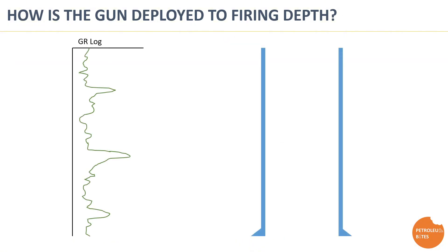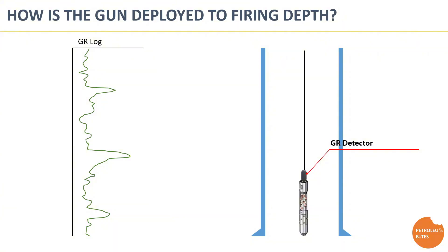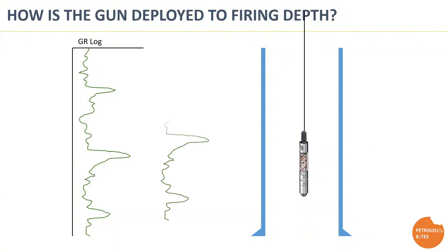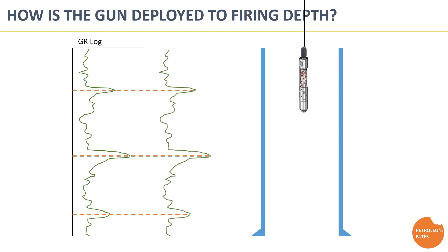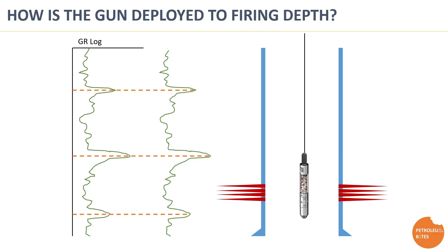To run in hole with the gun and fire exactly at the target depth, a logging tool is added along with the gun string to help locate the exact depth. A gamma ray log can help locate the targeted depth, as it is usually recorded for each well during the drilling operation. A gamma ray detector is deployed with the gun to record the gamma ray across the targeted intervals, and then compared with the original log to correct gun depth and fire exactly at the target formation. Other logs that can be attached include the Casing Collar Locator, or CCL, which identifies wellbore anomalies like casing collars, top of liners, pup joints, or nipples.